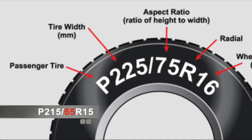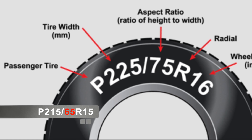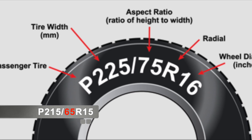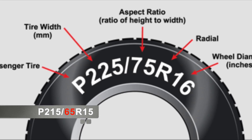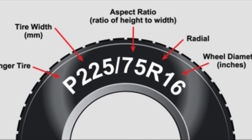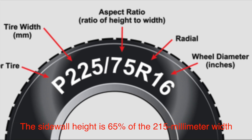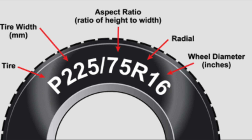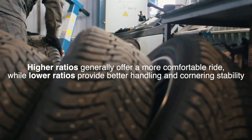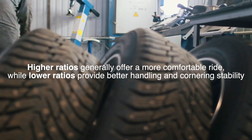Next up is the aspect ratio, which in our example is 65. This number is a percentage that tells us the height of the tire's sidewall — it is the ratio of the height of the tire's cross-section to its width. So in this case, the sidewall height is 65% of the 215-millimeter width. This aspect ratio can influence the comfort and performance of your ride: higher ratios generally offer a more comfortable ride, while lower ratios provide better handling and cornering stability.